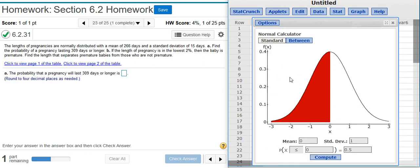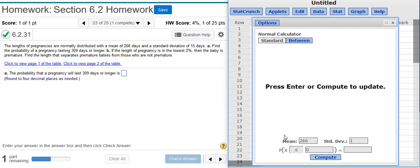In my normal calculator, I need to establish the mean and the standard deviation because the defaults here are for the standard normal distribution and we have a non-standard normal distribution. Here in the problem statement, it says the mean is 266 days, so I need to put that in here. And the standard deviation is 15.